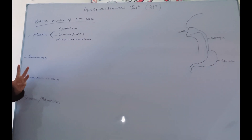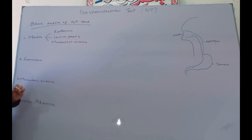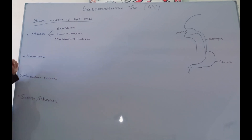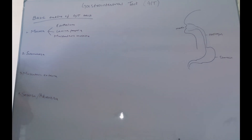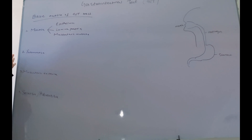The third component of the mucosa is the muscularis mucosa. Muscularis mucosa is a single layer of smooth muscle you will find in the mucosa. So this was all about the mucosa.